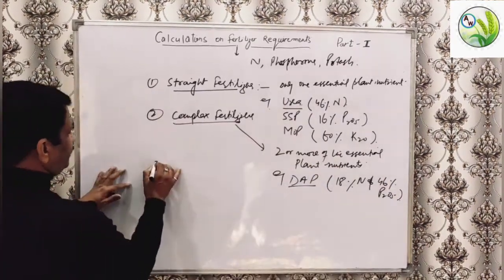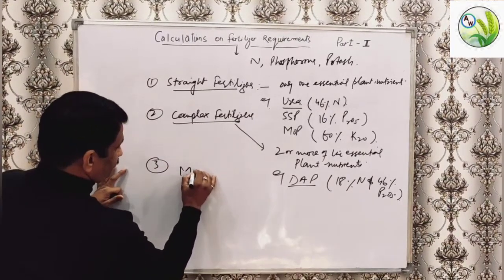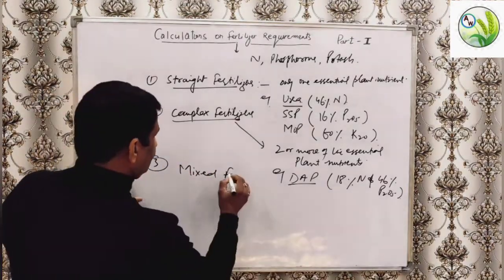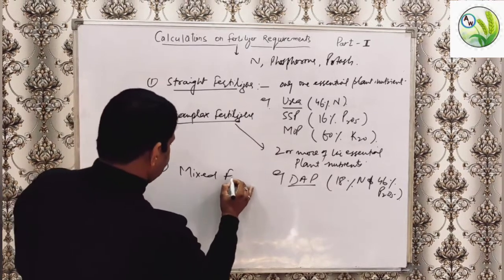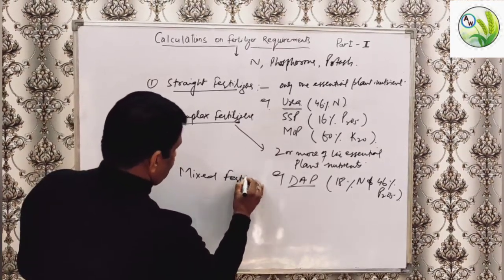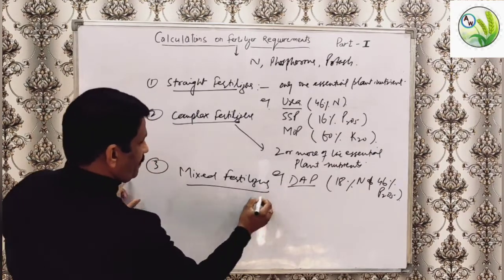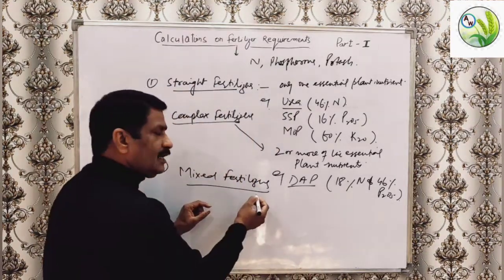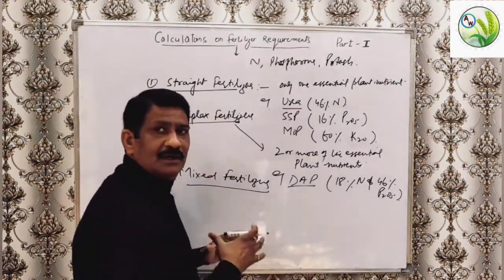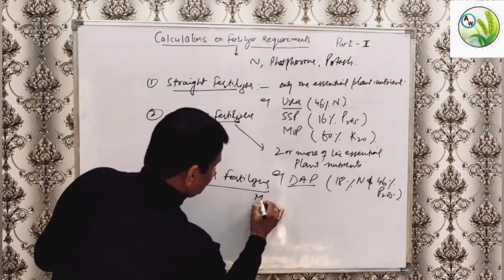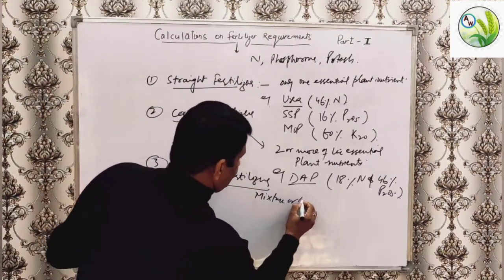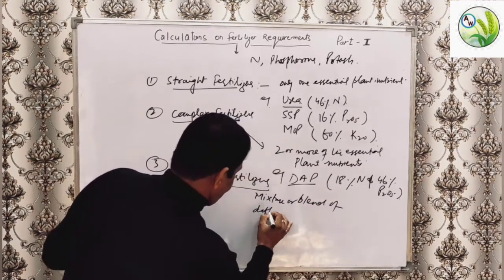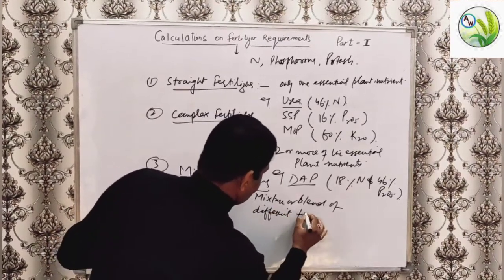The third one is mixed fertilizers. This basic information is required to be known to you before calculating the numericals on these fertilizers. Mixed fertilizers do not have any definite chemical formula — they are just a mixture or blend of different fertilizer materials.